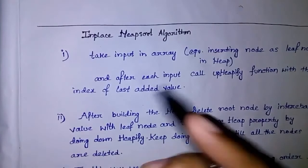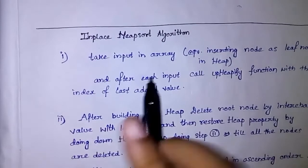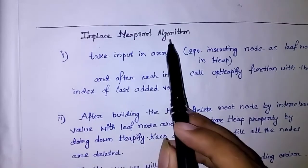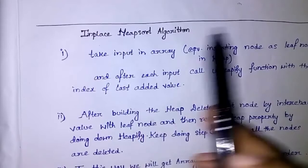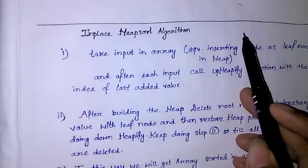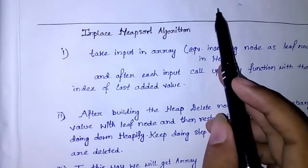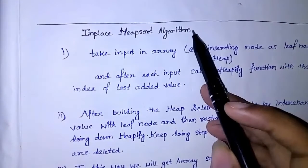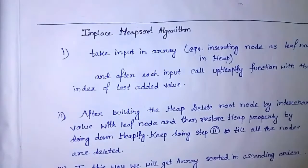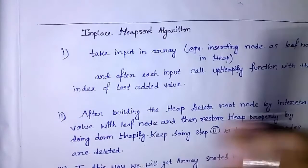Now let's see the In-place Heapsort Algorithm. In this video I will be discussing about the In-place Heapsort Algorithm. It is called In-place because we will be taking a single array for taking input as well as treating the array as a heap. We will not take any kind of auxiliary array. That is why it is called the In-place Heapsort Algorithm.